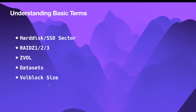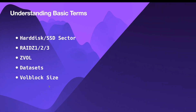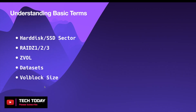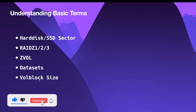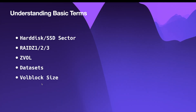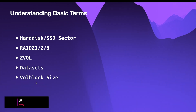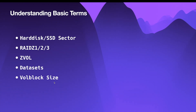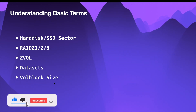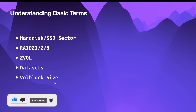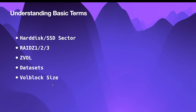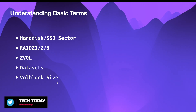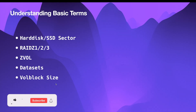You can only set your volblocksize at the time of creation of your ZVOL and cannot change it later. If you choose a small volblocksize, your padding overhead is going to be massive, so you're essentially forced to choose a bigger volblocksize. The TrueNAS default ZVOL volblocksize is 16K, but increasing it to 32K makes performance bad and unsuitable for databases. For example, Postgres usually writes at 8KB per volblocksize. MySQL and other databases are fine with 16K. Oracle can use 4K volblocksize.